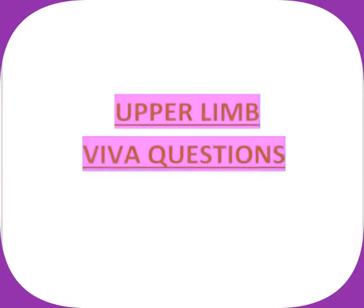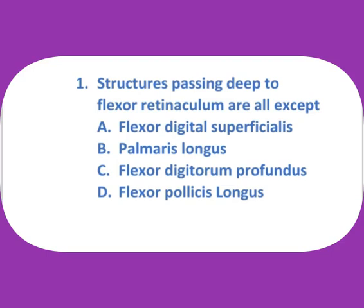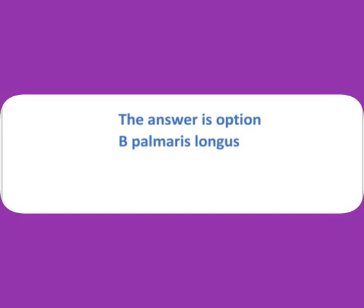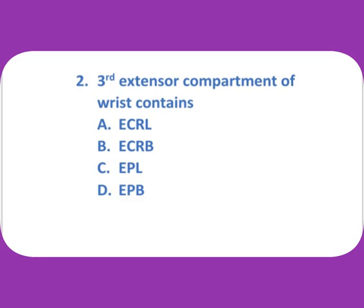Upper limb viva question: Structures passing deep to the flexor retinaculum are all except — (a) flexor digitorum superficialis, (b) palmaris longus, (c) flexor digitorum profundus, (d) flexor pollicis longus. The answer is option B: palmaris longus.